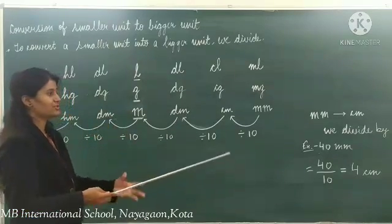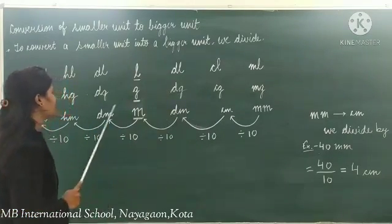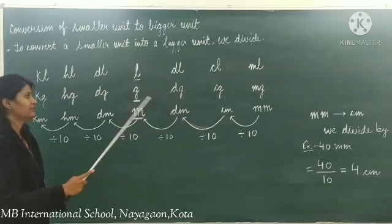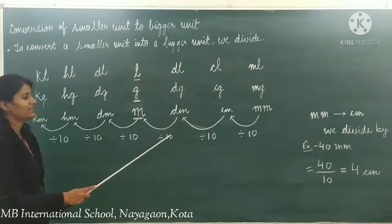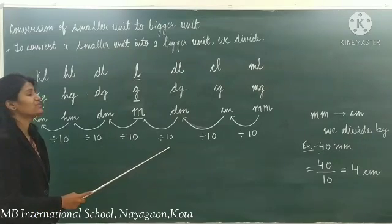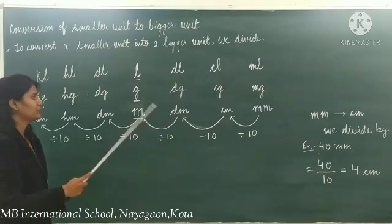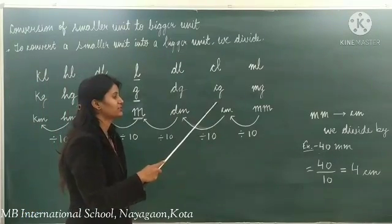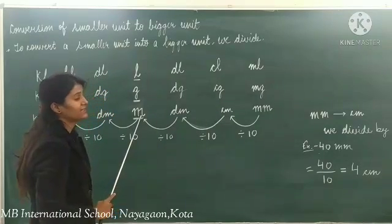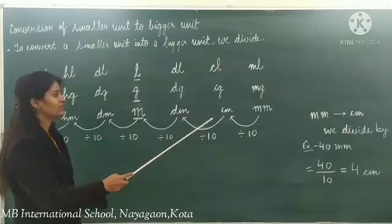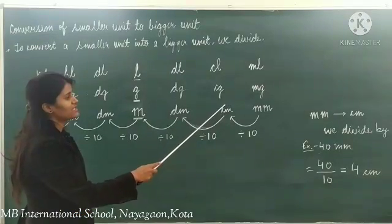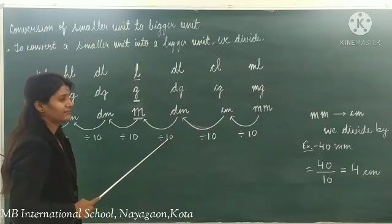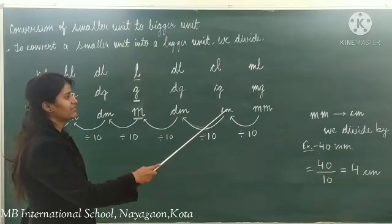For a direct conversion, like centimeter into meter: centimeter is the smaller unit and meter is the bigger unit. As compared to centimeters, meter is two steps up, so we have to divide by 100.